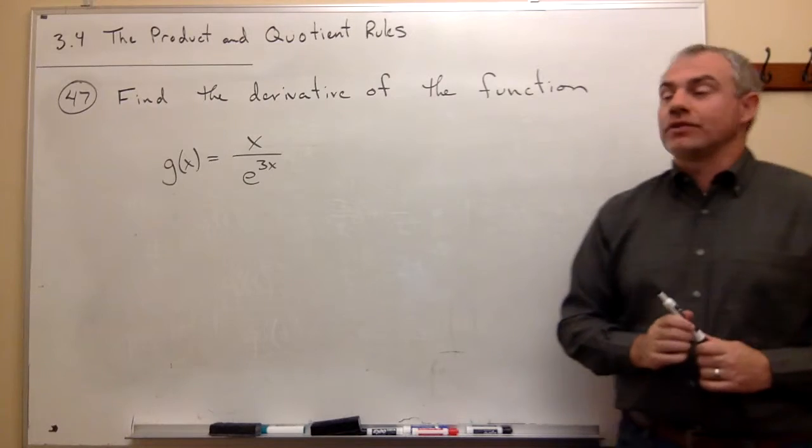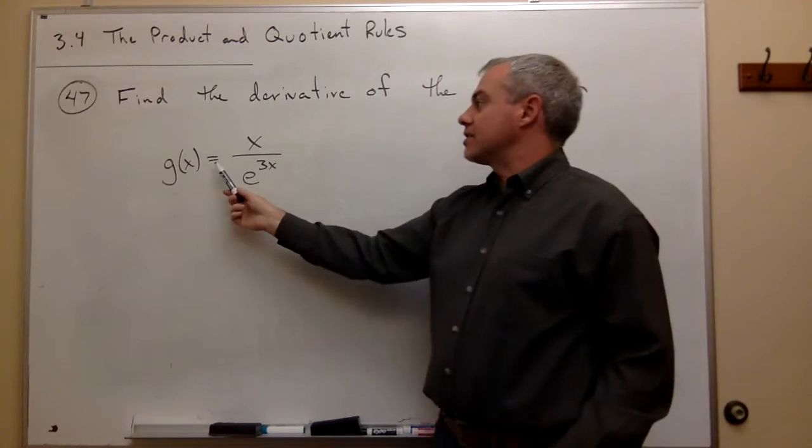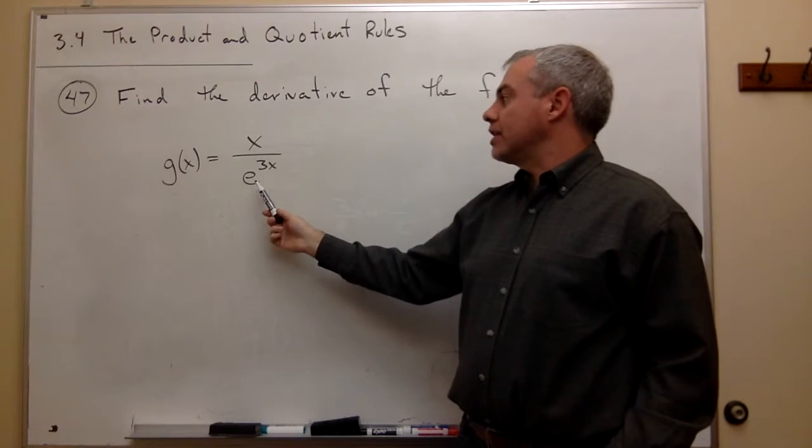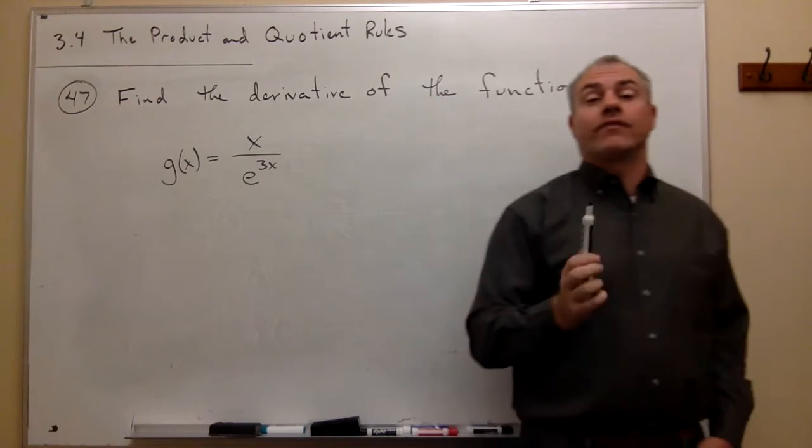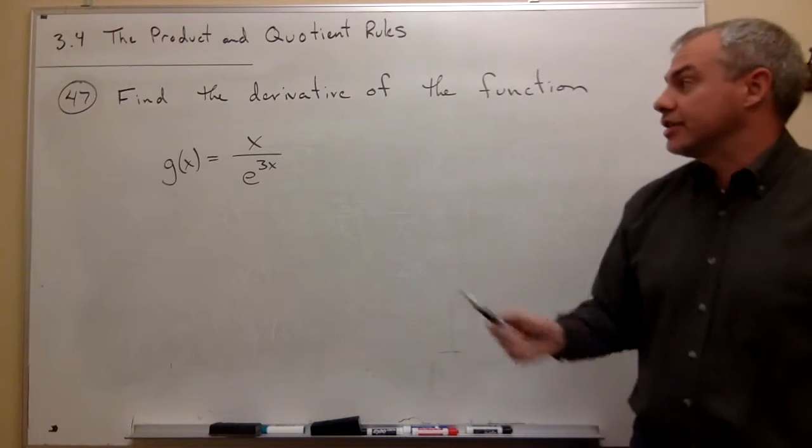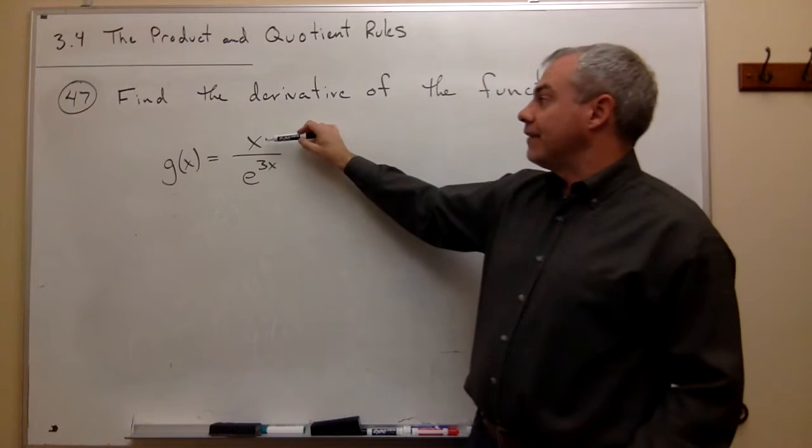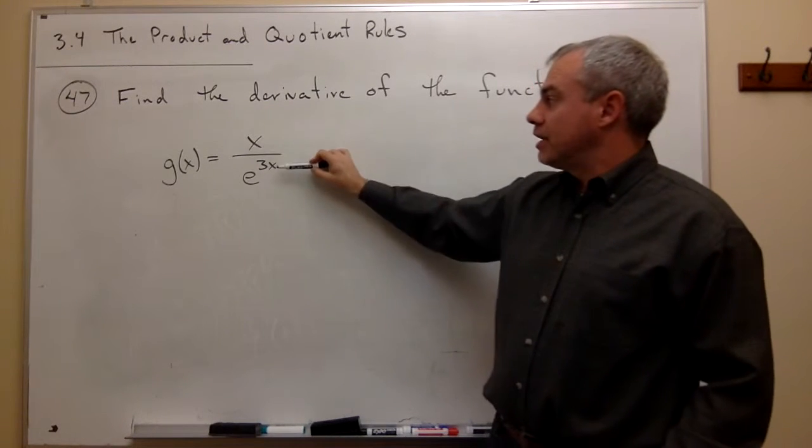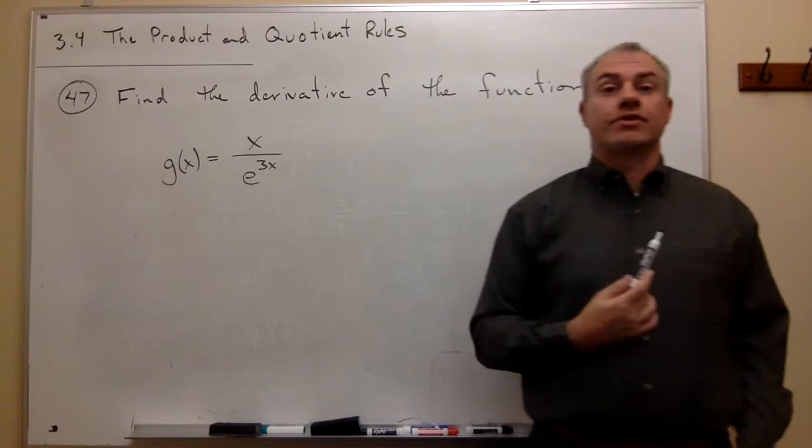In problem number 47, we'd like to find the derivative of the function g of x equals x over e to the 3x. So first and foremost, what I see when I look at this problem is I have a quotient. I have a function on the top and I have a function on the bottom, which is a quotient, so we need to use the quotient rule.